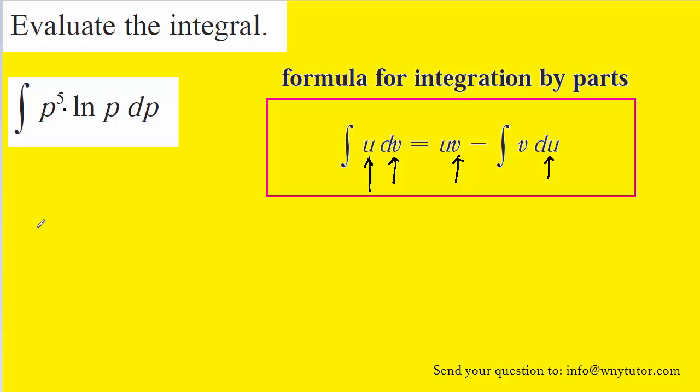So once we have decided what to let u equal, we will go ahead and write that down. We can set dv equal to the remaining portion of the integral. Since we've already assigned u to the natural log of p, what's left is p to the fifth dp. So we can let dv equal the remaining portion of the integral.